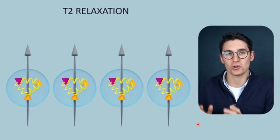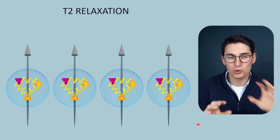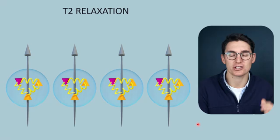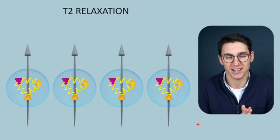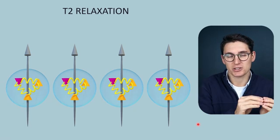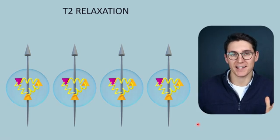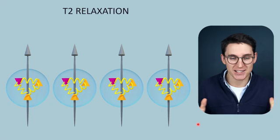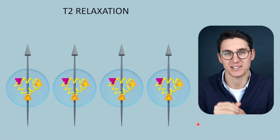In the next two talks we're going to look at the process of relaxation, which happens in two separate independent mechanisms. The first is the loss of transverse magnetization, otherwise known as T2 relaxation. The second process, which is independent of the first, is T1 relaxation, or the regaining of longitudinal magnetization. In today's lecture we're going to look at T2 relaxation, which is the loss of transverse magnetization.